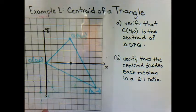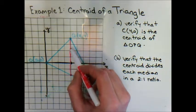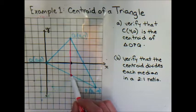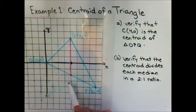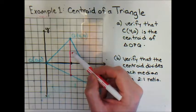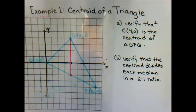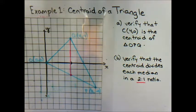In Part B, we are asked to verify that the centroid divides each median in a two-to-one ratio. Our centroid is at (4, 0). The median from Q meets line segment OP, and we need to verify the centroid divides this median in a ratio of 2 to 1 — meaning there is a length-two portion to a length-one portion on either side of the centroid.